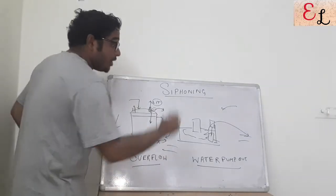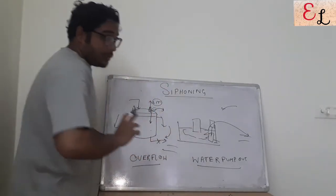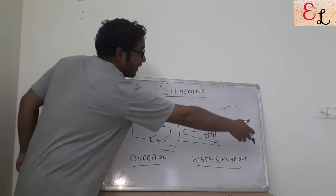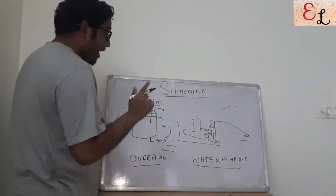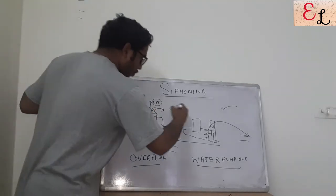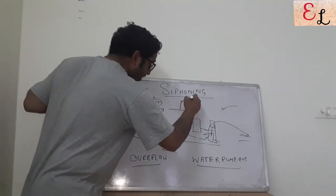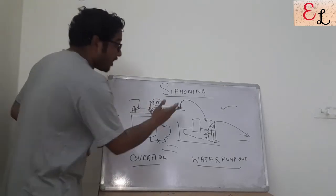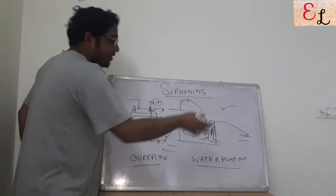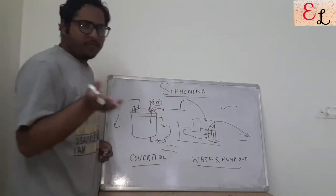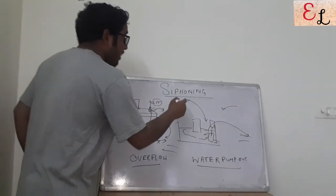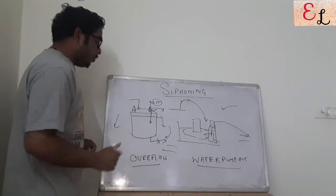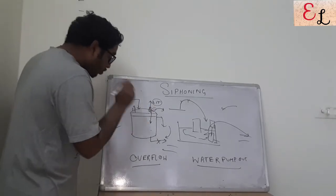Without the use of power, you can actually transfer water — first from a lower level to a higher level, and thereafter it falls to an even lower level. Siphoning is a practice wherein from a lower level you first transfer the liquid to a higher level and then to a further lower level. How do you transfer water to a higher level? It falls by gravity, but how do you make it rise first? This is where the concept of water siphoning comes in.